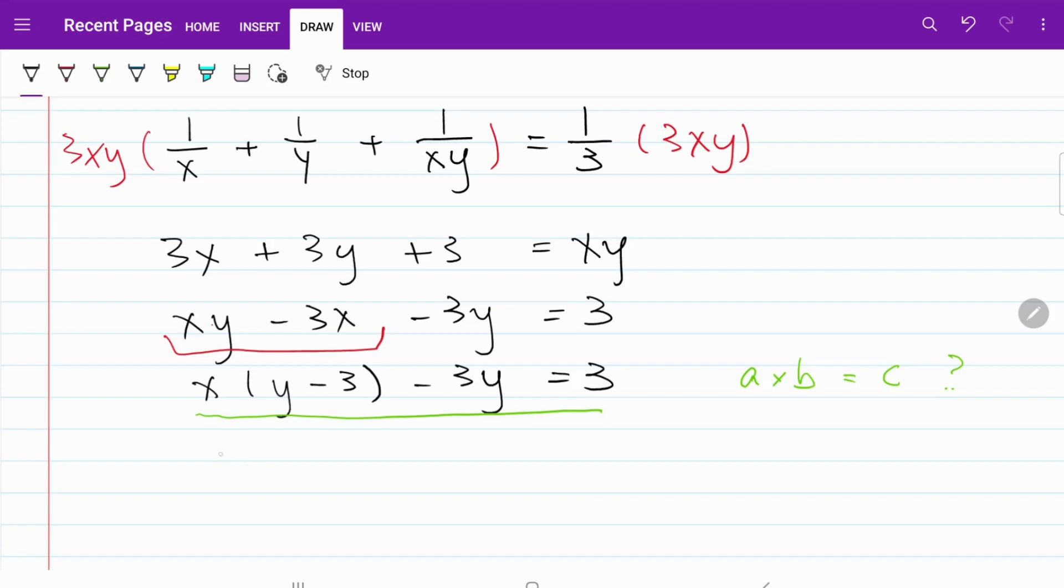Let's go ahead and try that. I'm going to write this as xy minus 3 minus 3y plus 9 is equal to 3 plus 9. Obviously, the plus 9 is the new substitution that I just introduced.